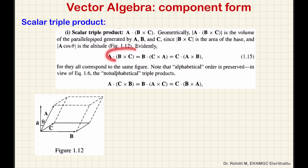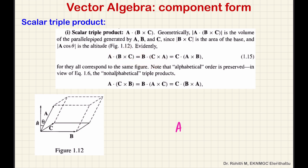Now, A dot (B cross C) is the scalar triple product, and we preserve the alphabetic cyclic order. You take A, B, and C in the cyclic order — replacing each with the next alphabet cyclically — and then you will get this identity. Applying the same cyclic operation again, you will get another expression, and all these expressions will be the same.